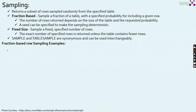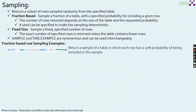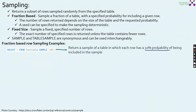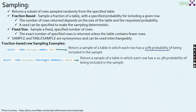Here are some examples for fraction-based row sampling. SELECT * FROM test_table SAMPLE 10 returns a sample of the table where each row has a 10% probability of being included in the sample. If you specify the number alone, it is probability-based. Using Bernoulli: SAMPLE(20.3) returns a sample where each row has a 20.3% probability of being included. Instead of SAMPLE, you can use TABLESAMPLE interchangeably.